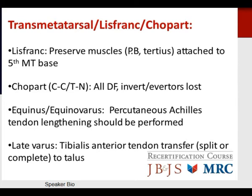Transmetatarsal, Lisfranc, and Chopart amputations are commonly done, most often due to trauma or vascular disease. For Lisfranc amputations, preserve the peroneus brevis and tertius attaching to the fifth metatarsal base to prevent deformity. For Chopart amputations through the calcaneal-cuboid or talonavicular joints, all dorsiflexors, inverters, and everters are lost, making equinus and equinovarus deformities common. Percutaneous or extended Achilles tendon lengthening is often used to prevent deformity. Late varus can be treated with tibialis anterior tendon transfer — split or complete — to the neck of the talus.